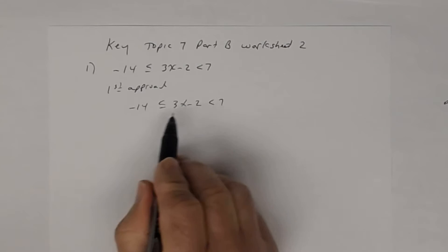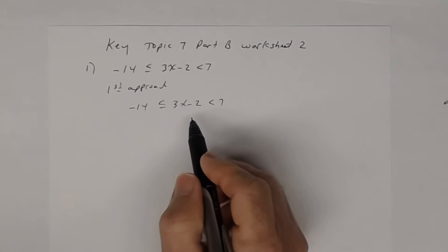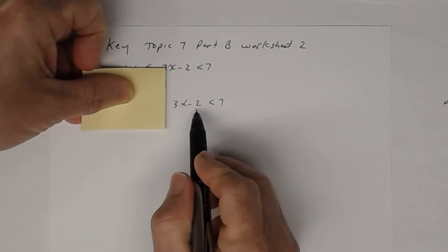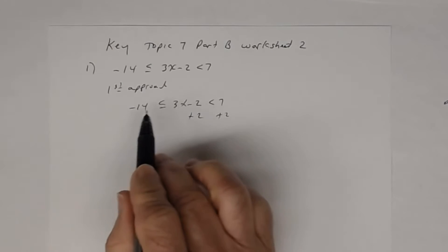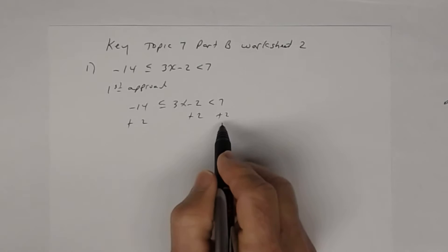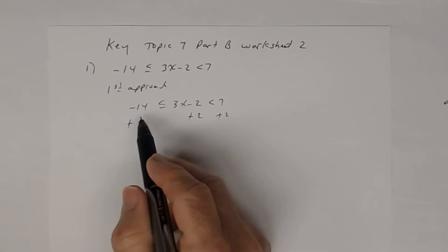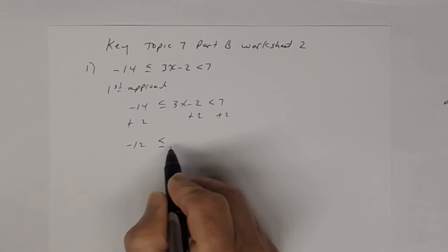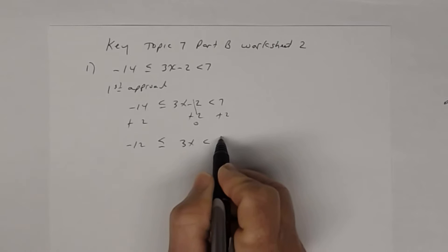You can do that because on the outsides you have real numbers. If this were a simple inequality, all you would do is add two to both sides. But since you have a compound inequality, you have to add two to all parts — the left side, the middle, and the right side. Combining like terms: negative 14 plus 2 is negative 12, less than or equal to 3x, which is less than 9.